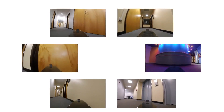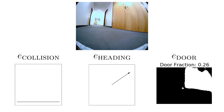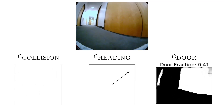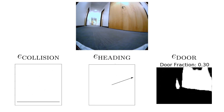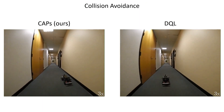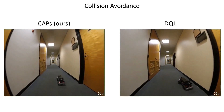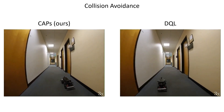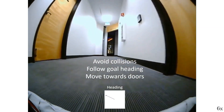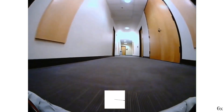11 hours of data was gathered, corresponding to 150,000 data points. Using this dataset, the following event cues were labeled: collision, heading, and the fraction of the image that was a door. The CAPS model was then trained to predict these event cues. We first compared our CAPS approach with deep Q-learning on a pure collision avoidance task. Both CAPS and DQL are able to successfully navigate the full length of the hallway. However, only CAPS is able to accomplish the multi-objective, goal-directed navigation task of avoiding collisions, following specified goal headings, and moving towards doors.